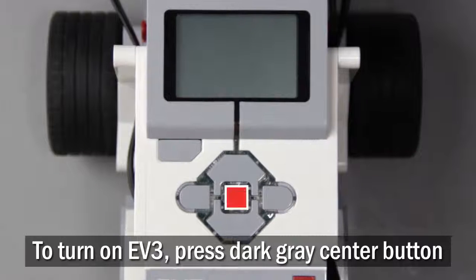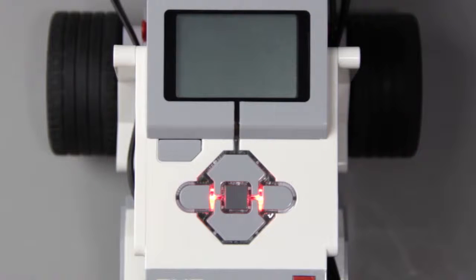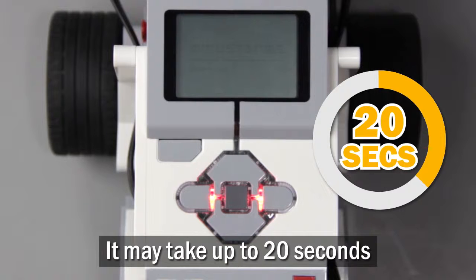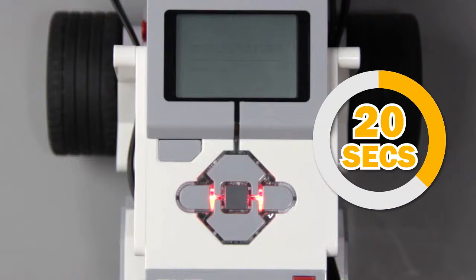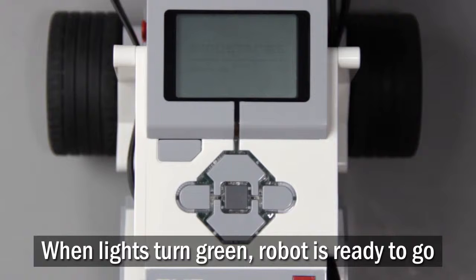To turn on the brick, press the dark gray center button. This may take up to 20 seconds. When the colored lights on the front of the EV3 turn green, the robot is ready to go.